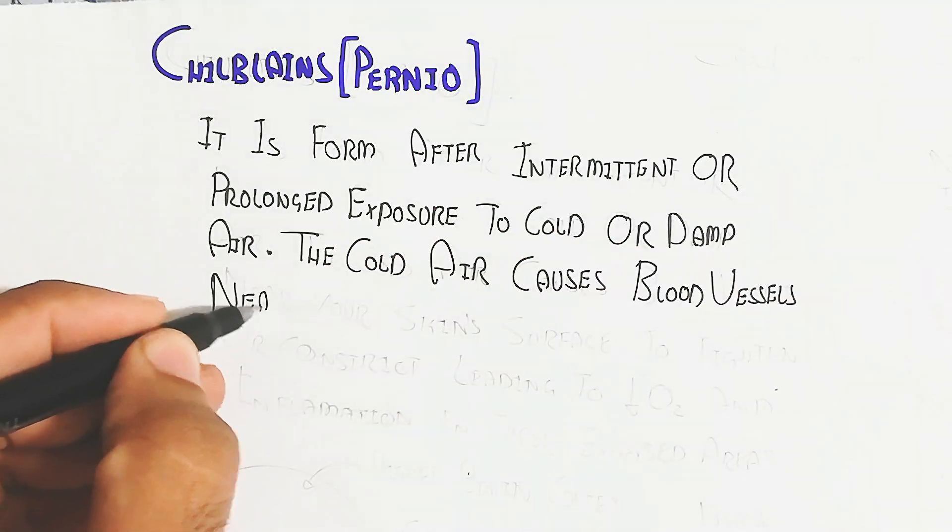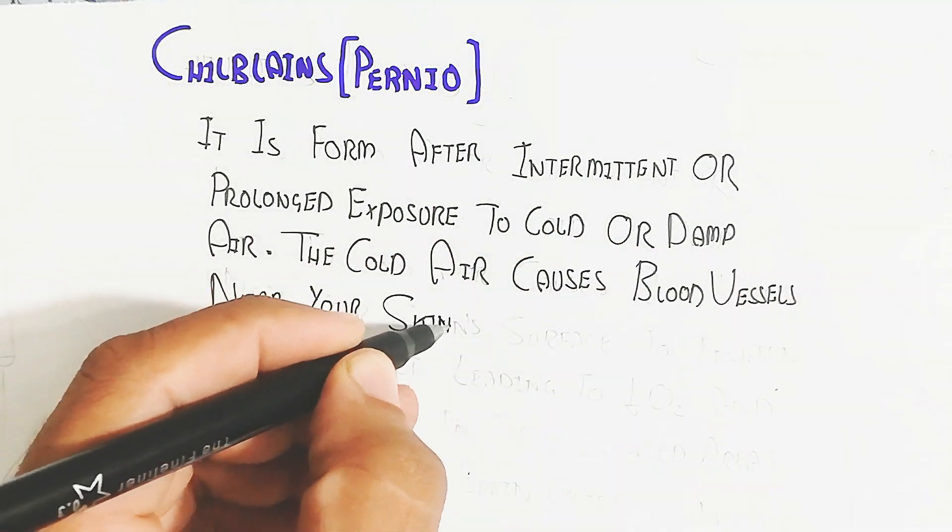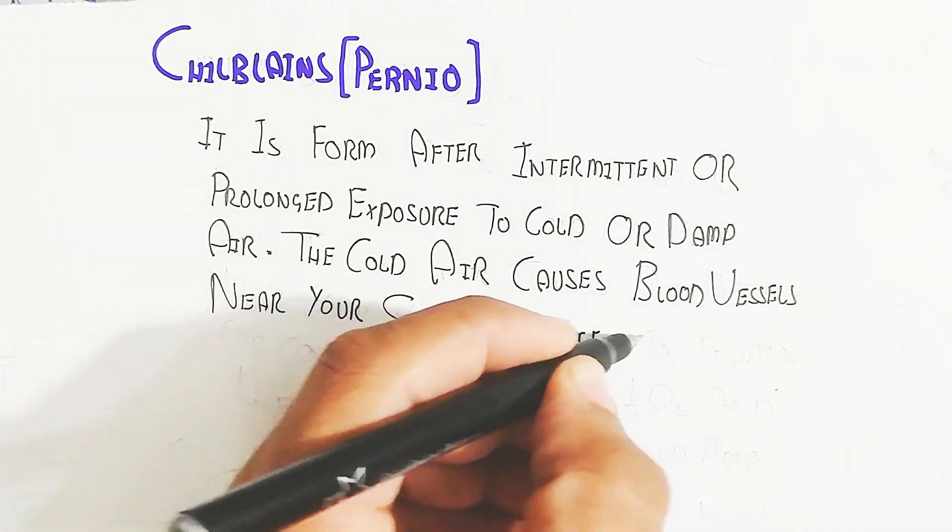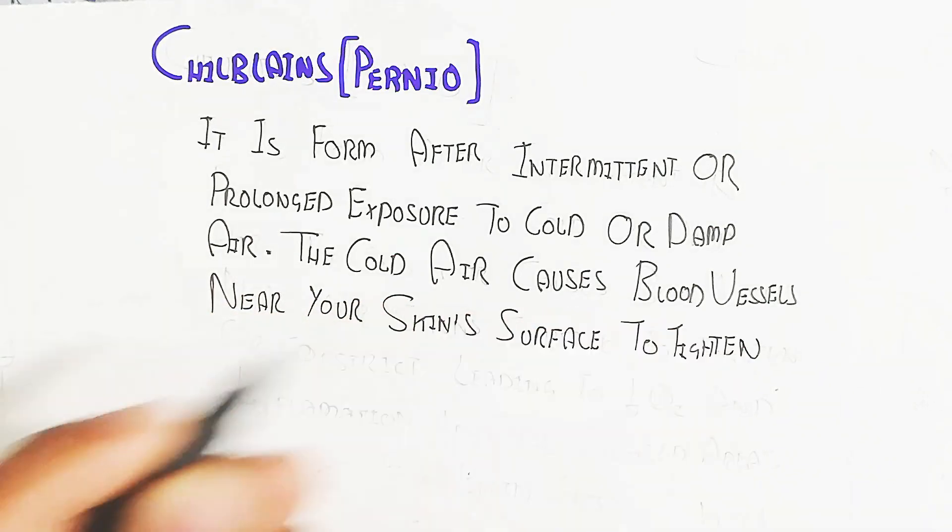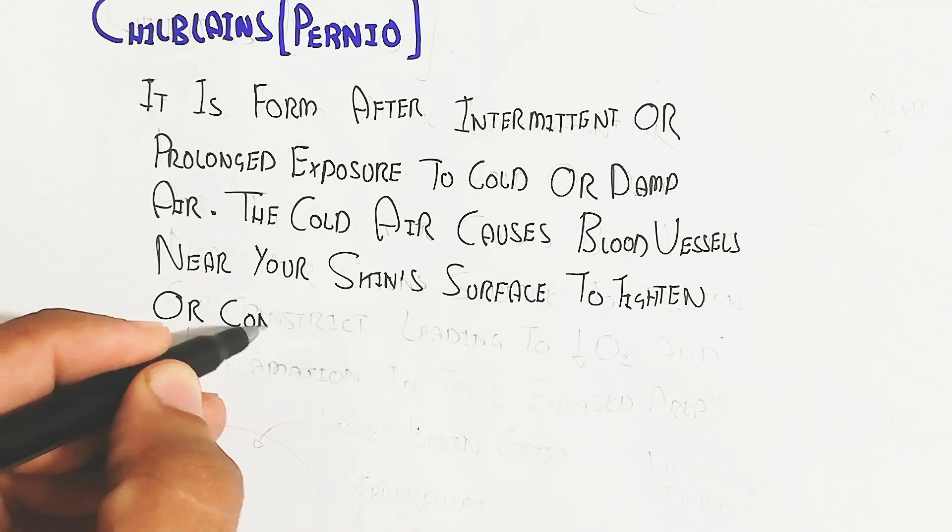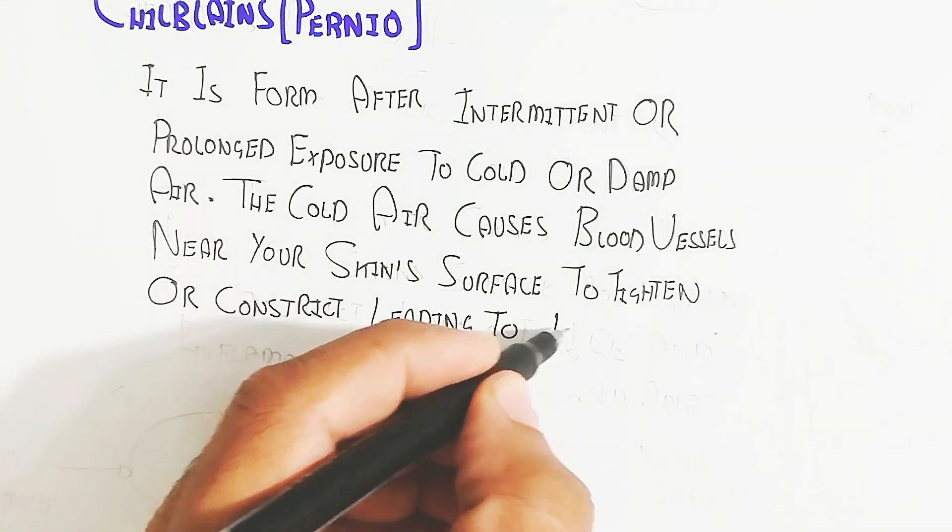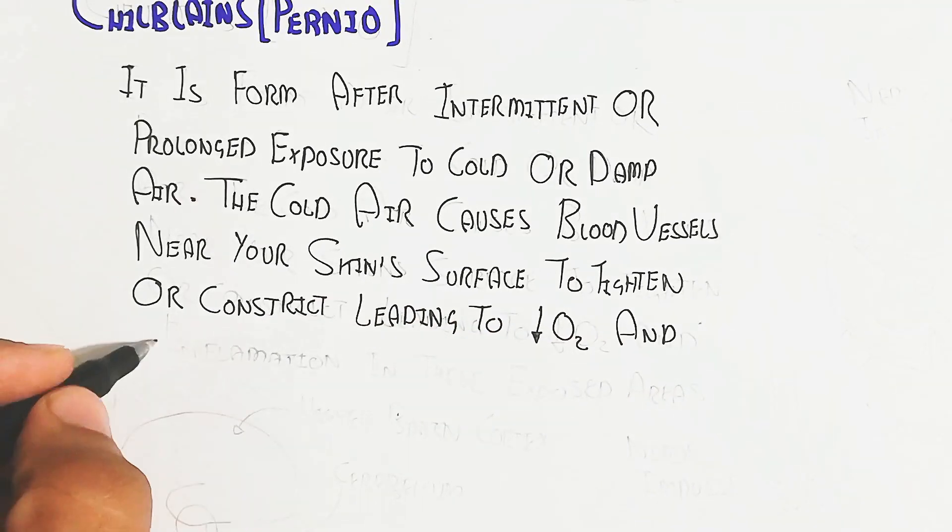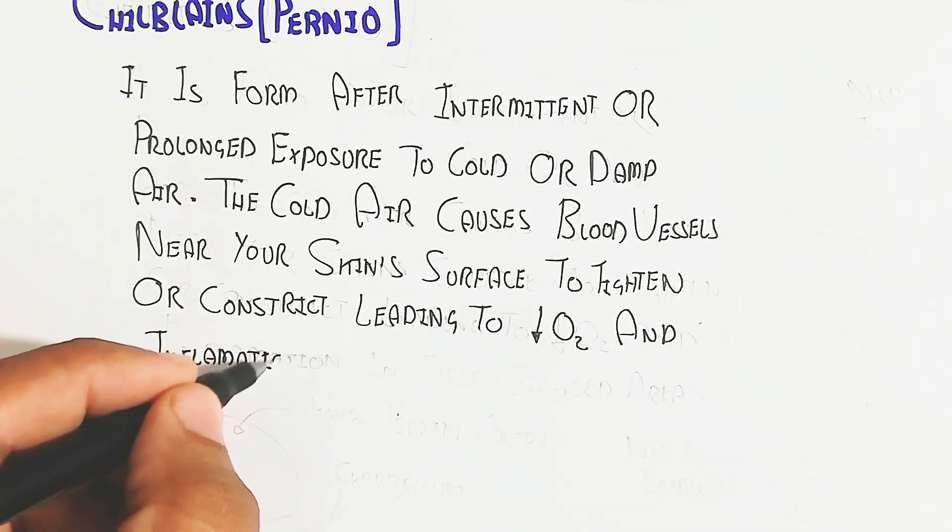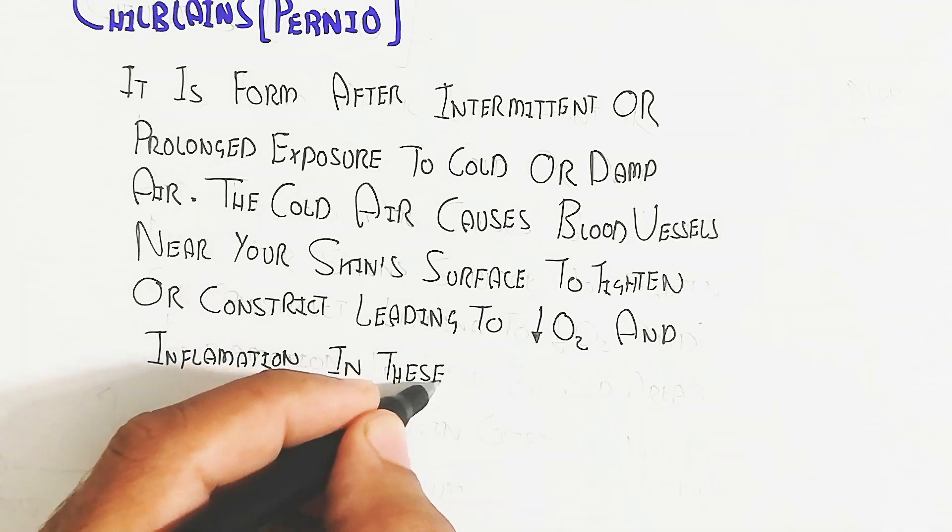So the vasoconstriction leading to hypoxia, and this leading to hypoxia and inflammation will increase in these exposed areas. These exposed areas will suffer the Chilblains.